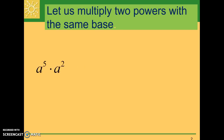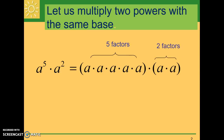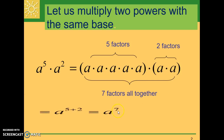If we have an example of a to the fifth times a to the second power, for the first part of that problem — a to the fifth — that means that we have a being used as a factor five times. For the second part of the problem, we have a being used as a factor two times. So we have a total of a being used as a factor seven times, giving us a final answer of a to the seventh power.